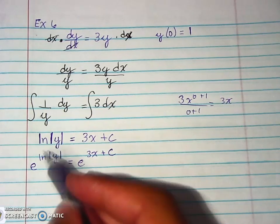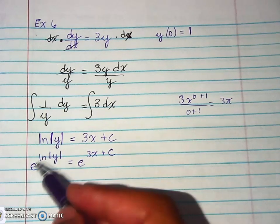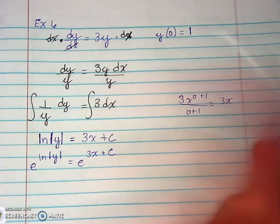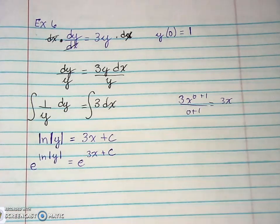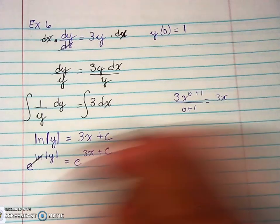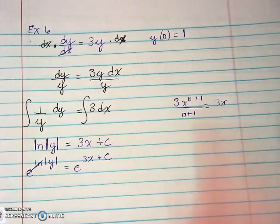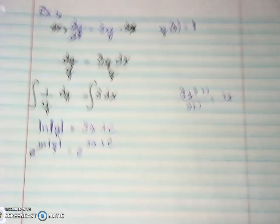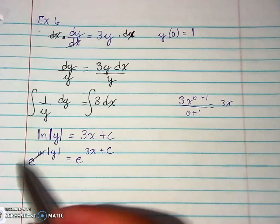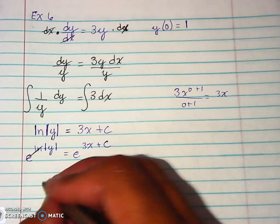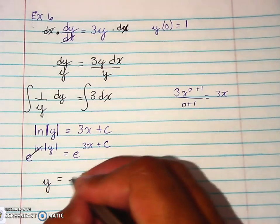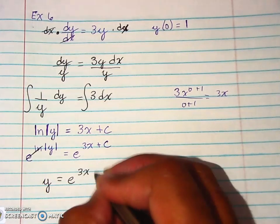If we do that, that means the natural log and e cancel out and we're left just with y. That's one of the rules that we have. The natural log and e cancel, they're opposites of each other, they're inverses, and just like inverse trig functions, inverse functions cancel each other out. So we're left with e to the 3x plus C.